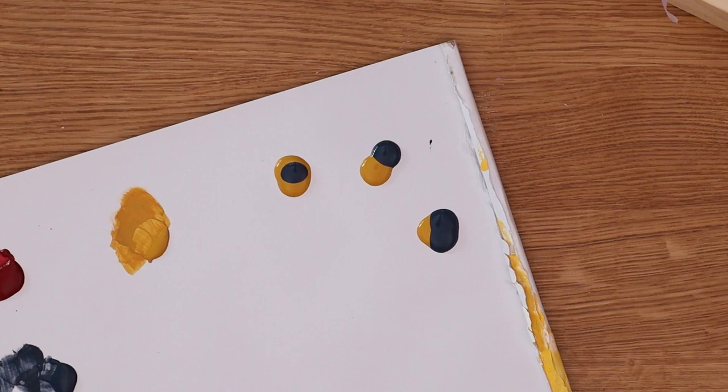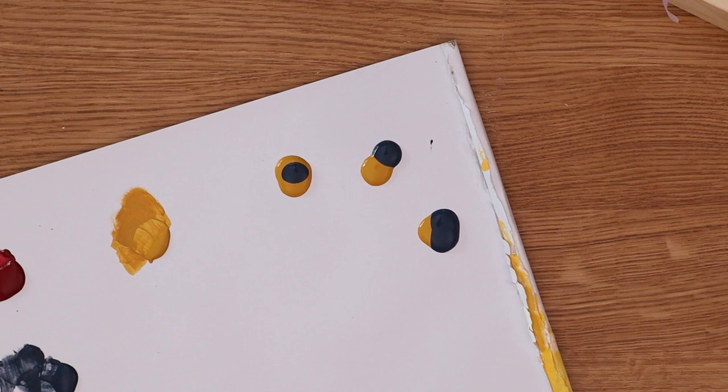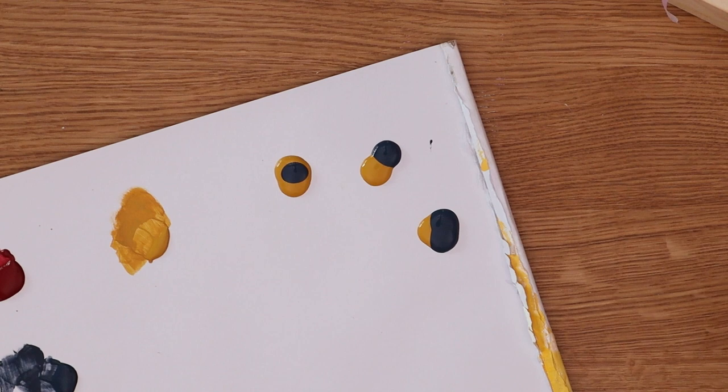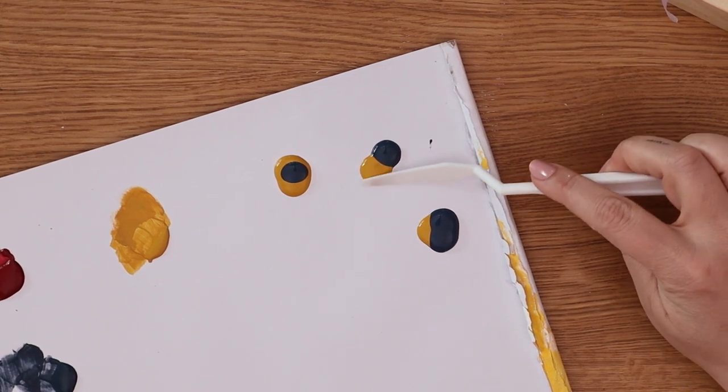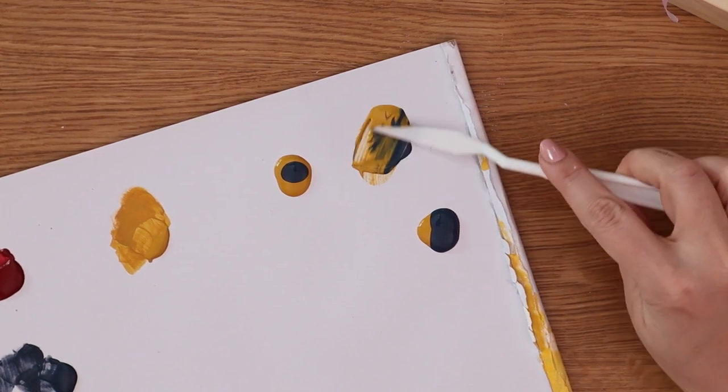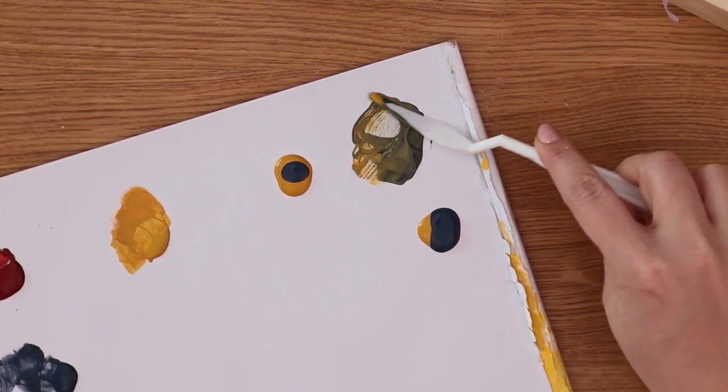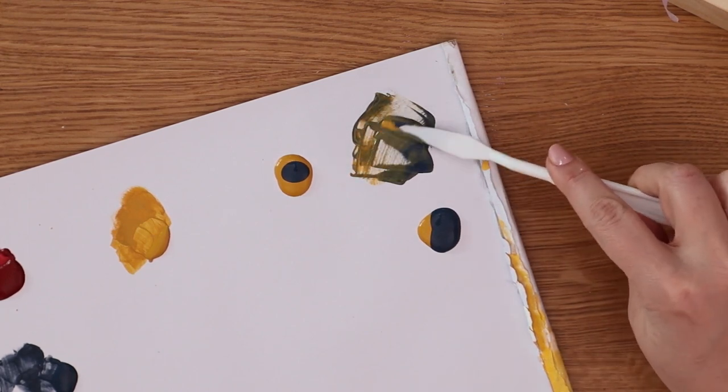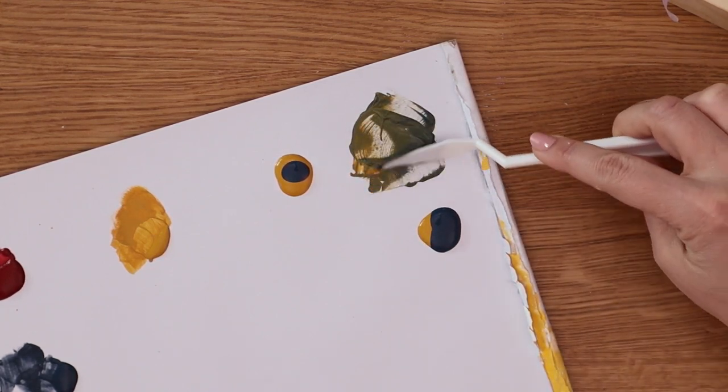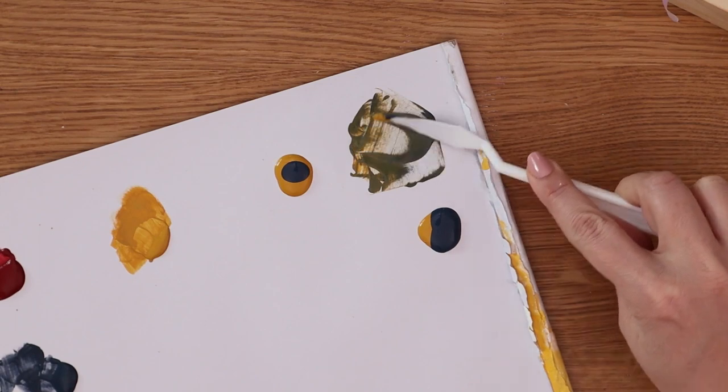The first is yellow green which is two parts yellow one part blue, green which is equal parts yellow and blue, and blue green which is one part yellow two parts blue. I'm just going to use a palette knife here to mix those colors together. These don't have to be perfectly equal, I'm just kind of eyeballing them but you can always add in more of a color if the mix seems a little off to you.